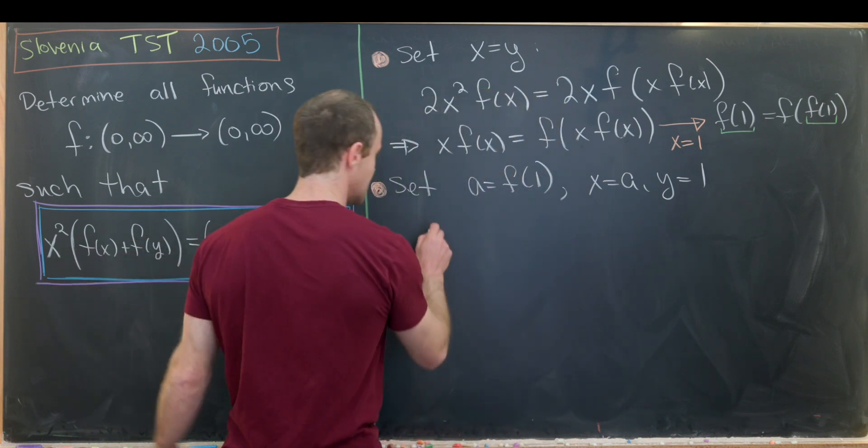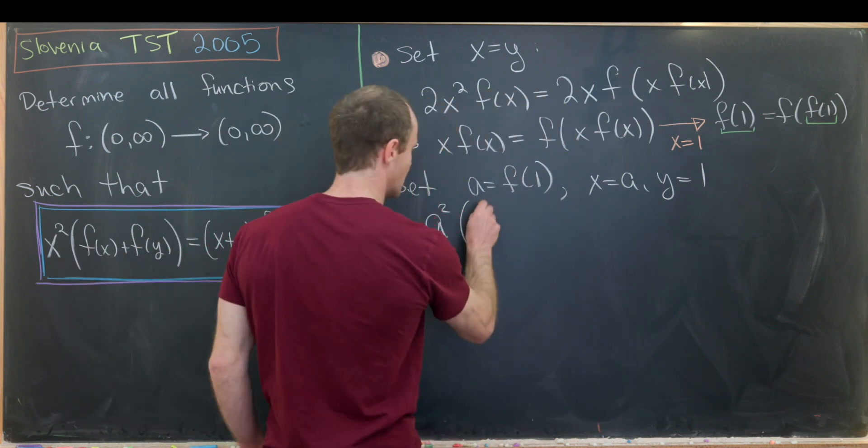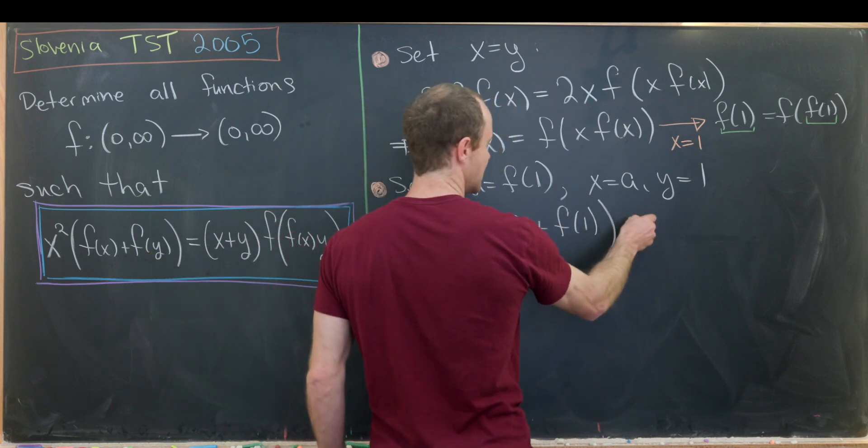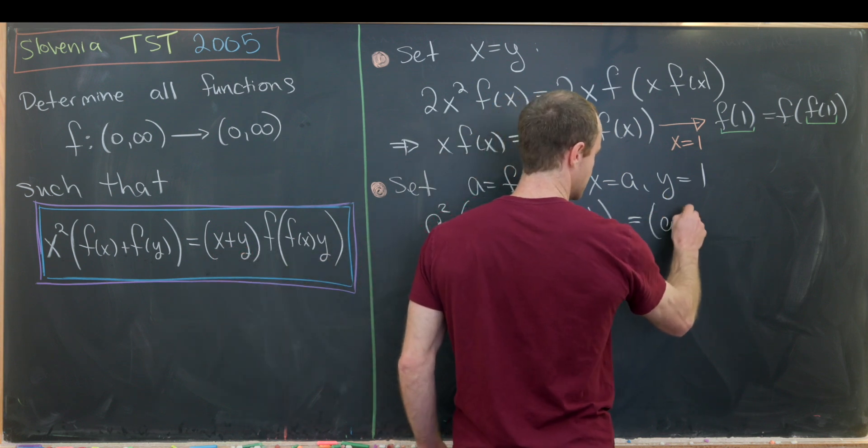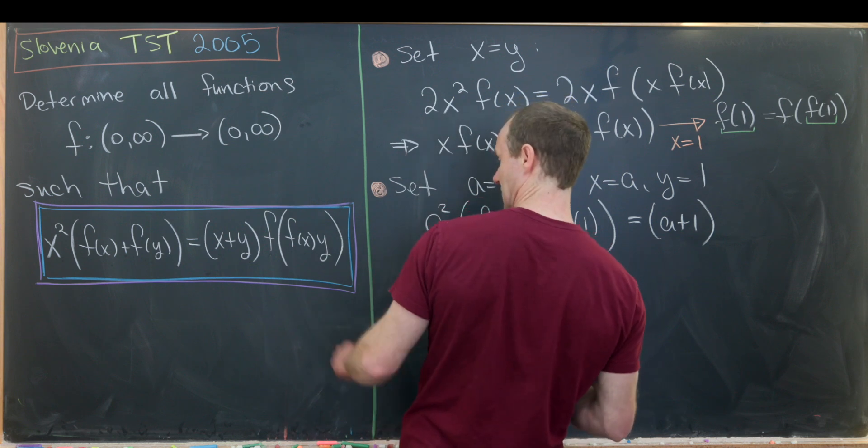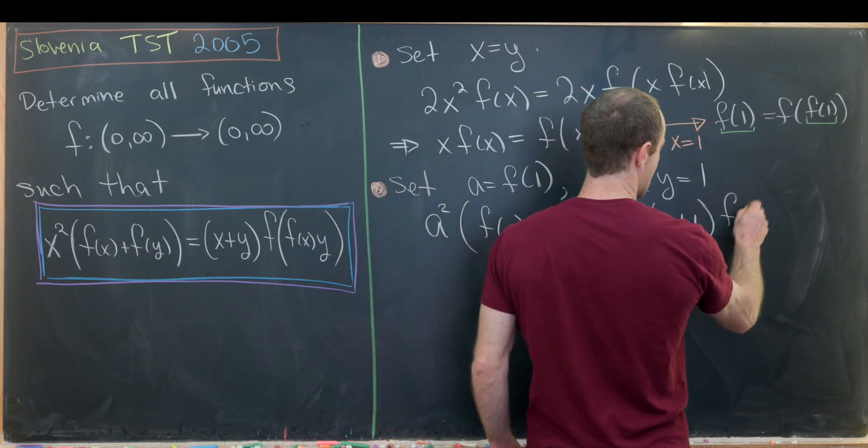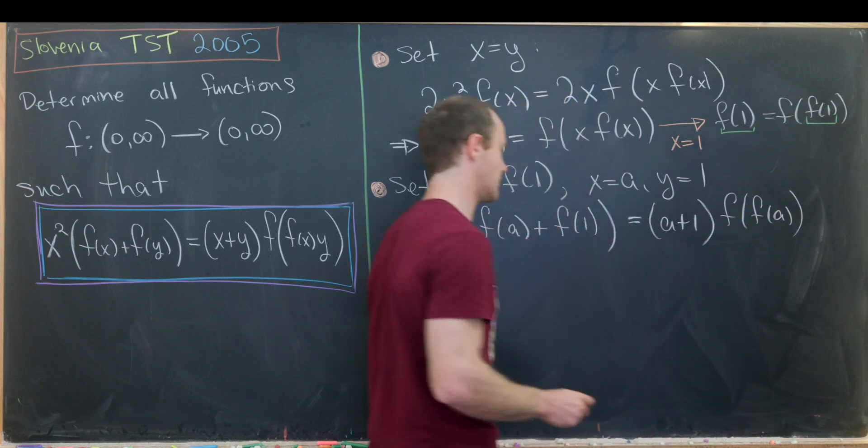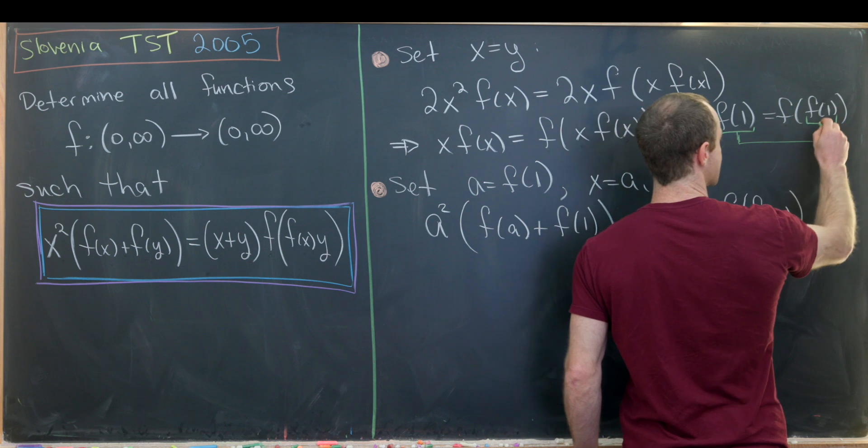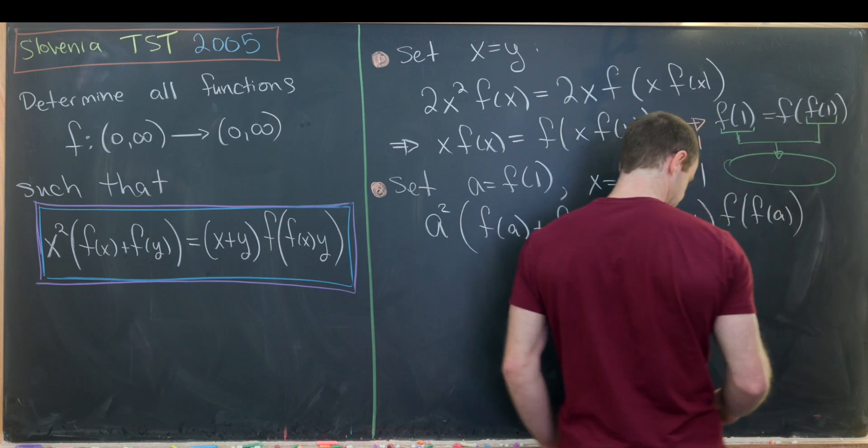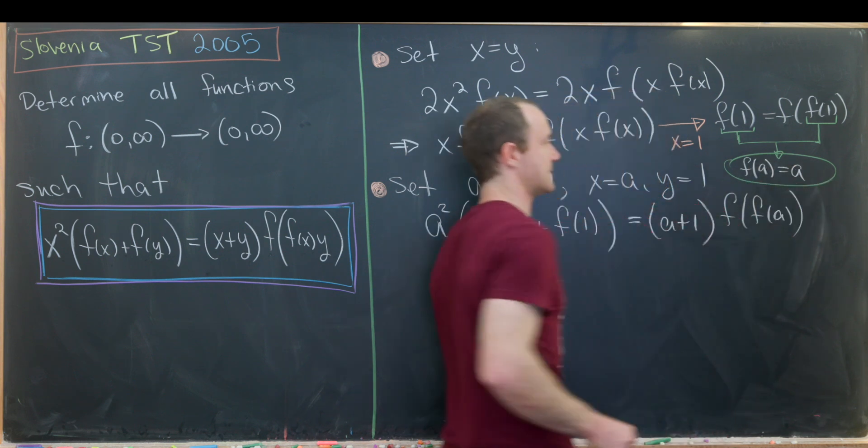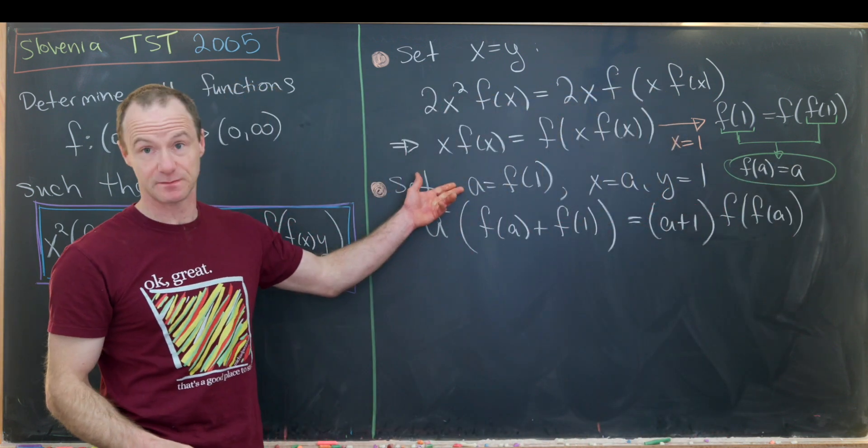So we have x equals a, that gives me a². Then we'll have f(a) + f(1). That's the left-hand side. And then over on the right-hand side, we'll have a + 1, and then we'll have f evaluated at f(a) times one, so that's going to be f evaluated at f(a). But let's notice by the fact that we called this thing a, this f(1) equal to a, that tells us that a satisfies the nice equation that f(a) = a. That's just by how we defined a.